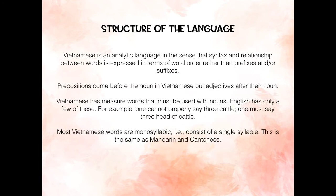Vietnamese is an analytic language in the sense that syntax and the relationship between words is expressed in terms of word order rather than prefixes and/or suffixes. Prepositions come before the noun in Vietnamese, but adjectives come after their noun. Vietnamese has measure words that must be used with nouns. English has only a few of these — for example, one cannot properly say 'three cattle'; one must say 'three head of cattle.'